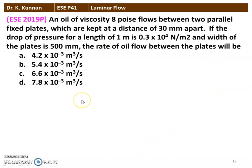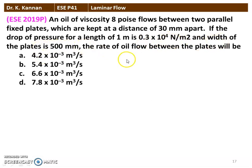The next question from the 2019 question paper: An oil of viscosity 8 poise flows between 2 parallel fixed plates which are kept at a distance of 30 millimeters apart. If the drop in pressure for a length of 1 meter is 0.3 × 10⁴ Newtons per meter square, and the width of the plate is 500 millimeters, the rate of oil flow between the plates will be — four options are given.